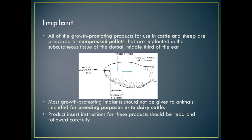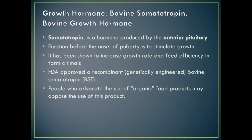Growth hormone, or bovine somatotropin, is produced by the anterior pituitary. Before puberty it functions to stimulate growth. It has been shown to increase growth rate and feed efficiency in farm animals and is FDA approved. Advocates of organic food products may oppose its use because somatotropin can affect our own hormones.